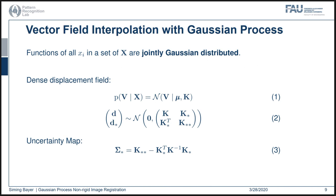Having the observation D, which is the sparse displacement field, the prior GP assumption can be converted into a GP posterior via Bayesian inference. Simultaneously, an uncertainty map indicating the mathematical confidence of the estimated displacement vector can be obtained from the diagonal entries of the covariance matrices using equation 3.